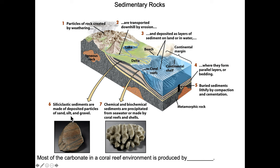The clastic sediments are made up of deposited particles of sand, silt, and gravel. These sediments are usually going to be the resistant left-behind material that makes up granite — some of that most resistant material being quartz and feldspars. We can also induce precipitation of sediment chemically and biologically.